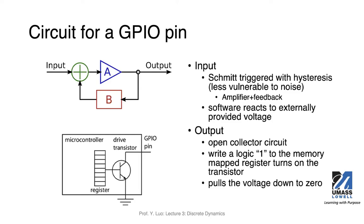The internal design of GPIOs may vary, but they follow common design principles. For input, they use a Schmitt trigger with hysteresis — essentially an amplifier with some feedback — which is useful to remove jitter in noisy signals. With this cleaner signal, the software will react to the actual applied voltage. Active high means if the voltage is close to VDD, that's a logic one.